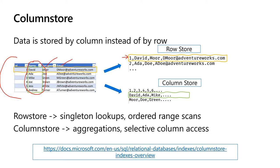All values in a column are saved together, so if I want to analyze data by name, I only need to read that one column segment — I don't need to read ID, surname, email, or anything else. That makes aggregation super fast. In Azure SQL, you have two options: row store, which is great for singleton lookups and ordered range scans; and column store, which is perfect when you want to aggregate data and have very selective column access.